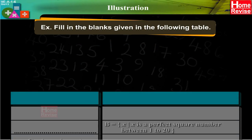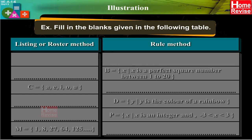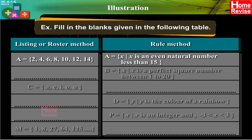Fill in the blanks in the following table. Roster method: A = {2, 4, 6, 8, 10, 12, 14}. Rule method: A = {x : x is an even natural number less than 15}. Rule method: B = {x : x is a perfect square number between 1 and 20}. Roster method: B = {4, 9, 16}. Roster method: C = {a, e, i, o, u}. Rule method: C = {x : x is a vowel from the English alphabets}.